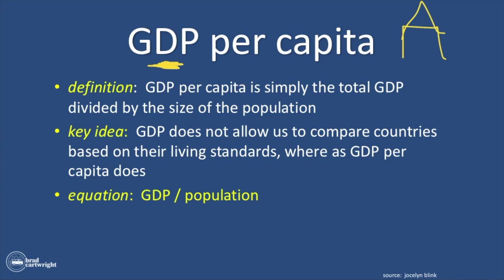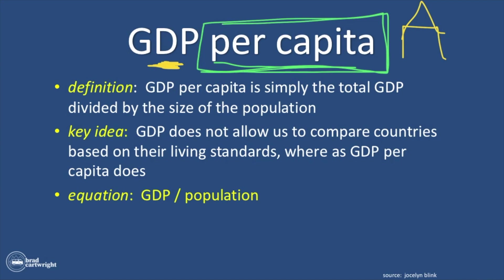Now, you can imagine if a country is larger — like India, which is an enormous country and the second most populated place on this planet — it would make sense that the GDP of India would be larger than the GDP of Nepal. Why? Because there are so many more people in India than there are in Nepal. So economists had to come up with a way of comparing the economic activity of one country to another — just a way of comparing between two countries.